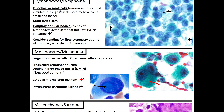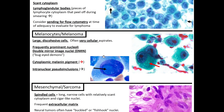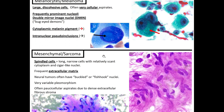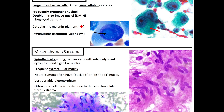Speaking of lymphoma: these are also often discohesive small cells with scant cytoplasm. You can see lymphoglandular bodies — pieces of lymphocyte cytoplasm that peel off during smearing, which the arrows are pointing to. If you think it could be a lymphoma, at an adequacy you would want to put some of that material into RPMI to preserve those cells so you can send them for flow cytometry, which helps the hematopathologist work up the lymphoma and identify which CD markers it expresses.